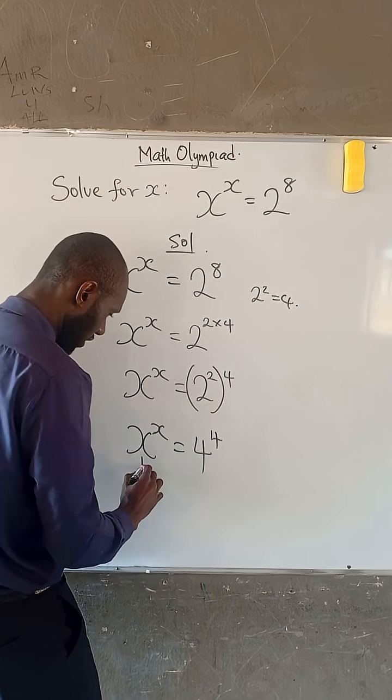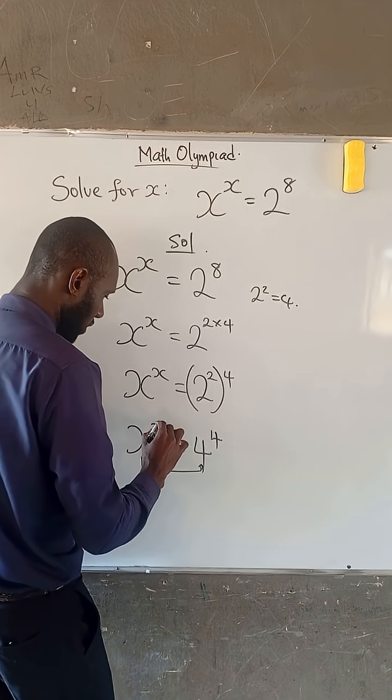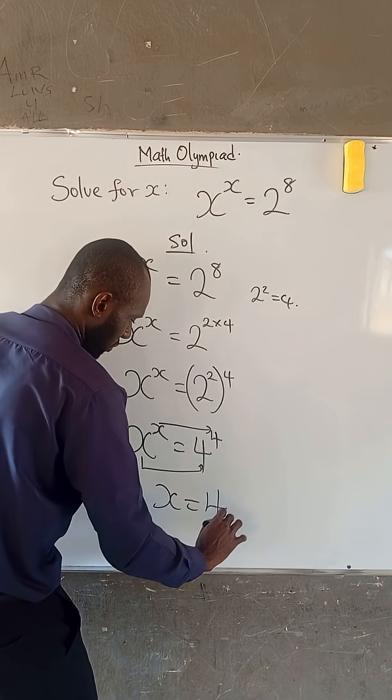So, at this point, since the base is the same and also the index is the same, it's obvious that x is equal to 4.